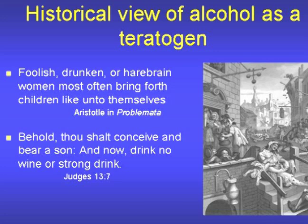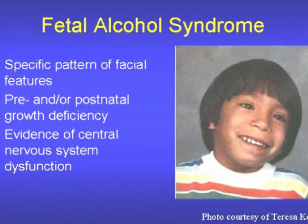The modern era of recognition of the detrimental effects of prenatal alcohol exposure began when Ken Jones, David Smith, and associates published two papers in 1973, describing a common set of features in 11 children whose mothers were known to be alcoholics or heavy drinkers during their pregnancies. Subsequently, it was discovered that a common pattern of anomalies had been described previously in the French medical literature in 1967 by a French physician, Philippe Lemoyne. This constellation of features was named fetal alcohol syndrome in 1973 by Jones and colleagues.